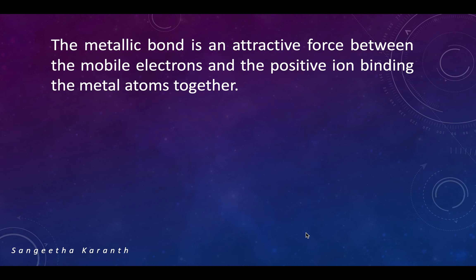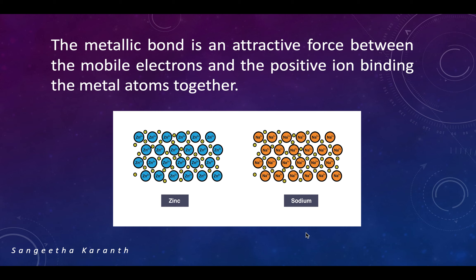First, coming on to what do you mean by a metallic bond. A metallic bond is nothing but an attractive force which occurs between mobile electrons and positively charged metal ions. Here you can see two examples — this is for zinc. These are the zinc ions and these are the mobile electrons. The attractive force that exists between these mobile electrons and the zinc ions is nothing but the metallic bond. The same way we can explain it for sodium.